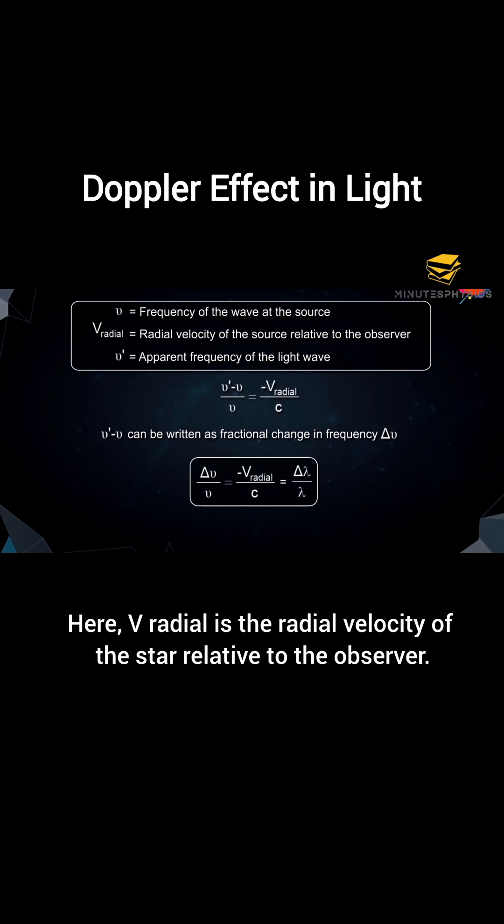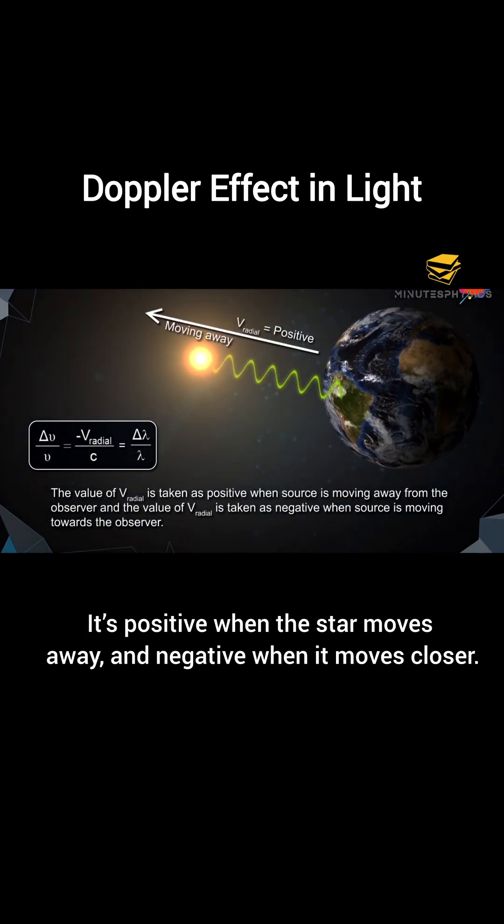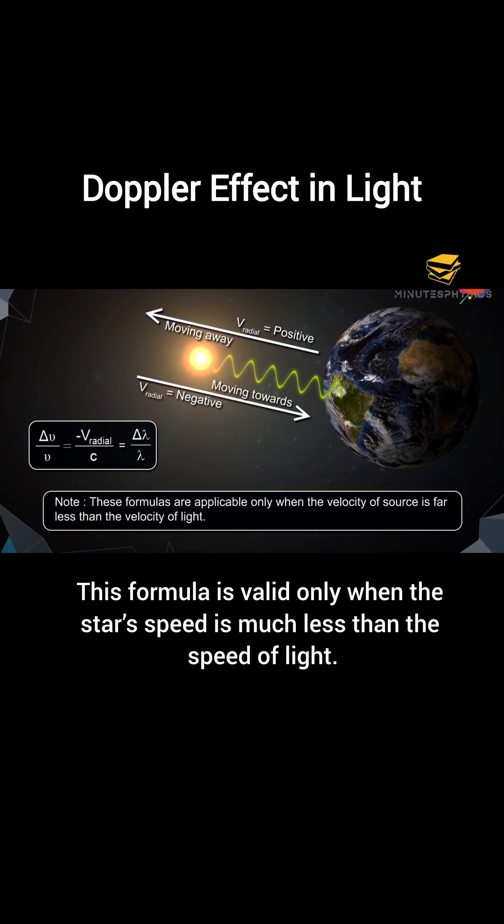Here, V radial is the radial velocity of the star relative to the observer. It's positive when the star moves away and negative when it moves closer. This formula is valid only when the star's speed is much less than the speed of light.